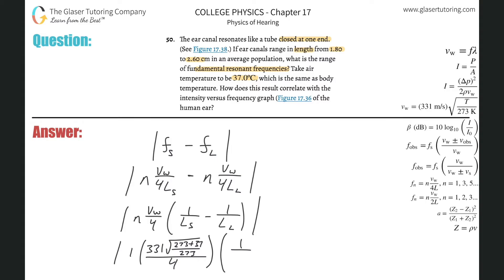That's all going to be multiplied now by one over the shorter length. What was the shorter length? 1.8 centimeters, but we need that in meters, so just move the decimal two places to the left - that's 0.018 - then minus 1 over 0.026.